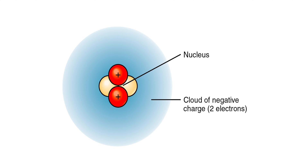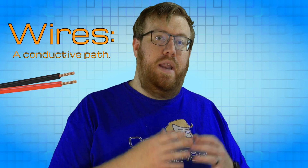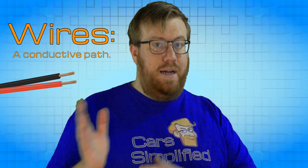Protons have a positive charge, neutrons are neutral, and electrons are not just negatively charged but also not part of the nucleus. Electrons have a negative charge, so wherever there are a lot of them, there will be a negative charge. If there's a surplus of electrons in one location and a deficit elsewhere, and they are given a conductive path to get there, the electrons are going to flow from the negative area to the positive area.